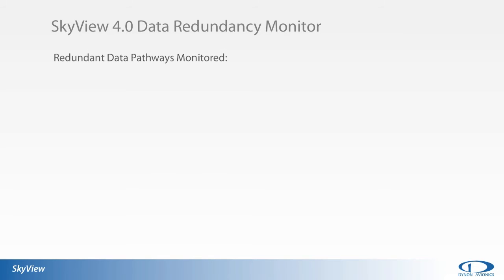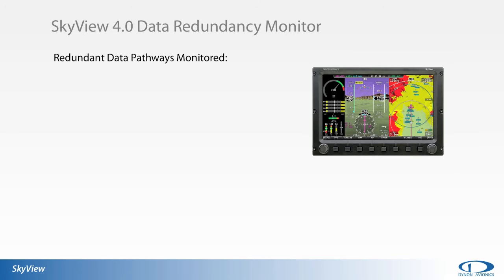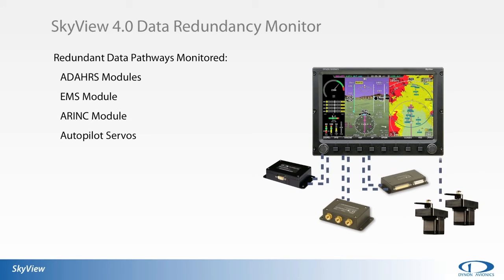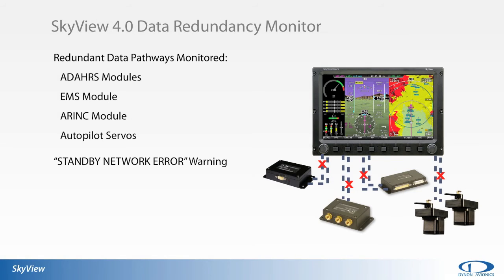The SkyView system incorporates redundant data and power lines for connected system components such as ADHARS modules, the EMS module, an ERIC module, and autopilot servos. If one data or power line is lost, functions from the module will still operate. With 4.0 firmware, SkyView will now monitor these redundant data and power lines, then warn the pilot with an on-screen enunciation of standby network error if a redundant data or power line is lost.